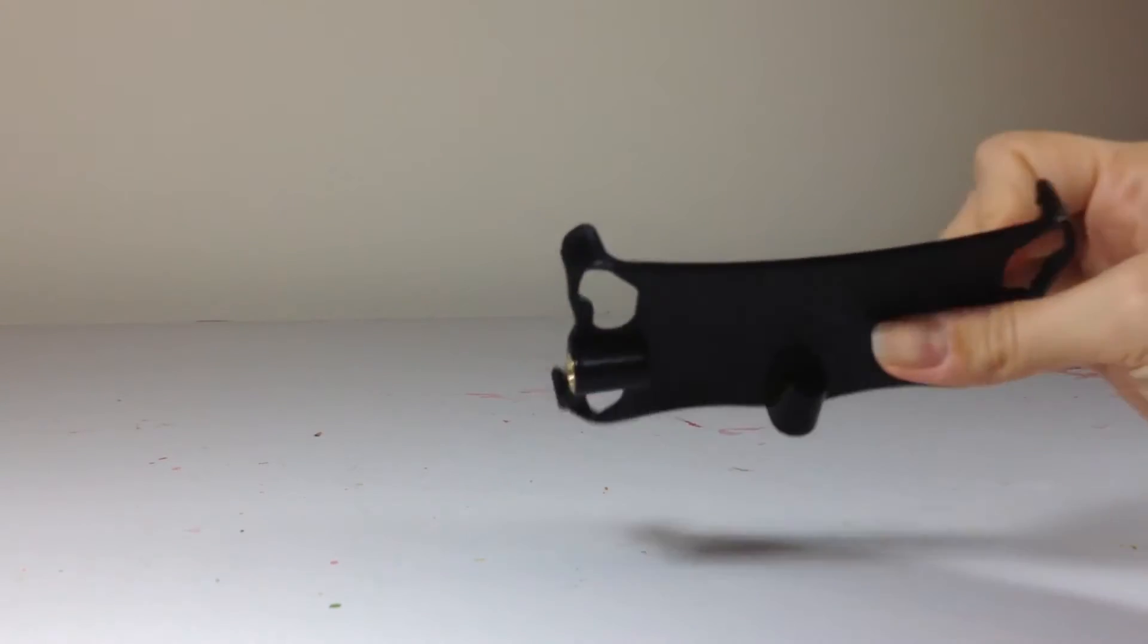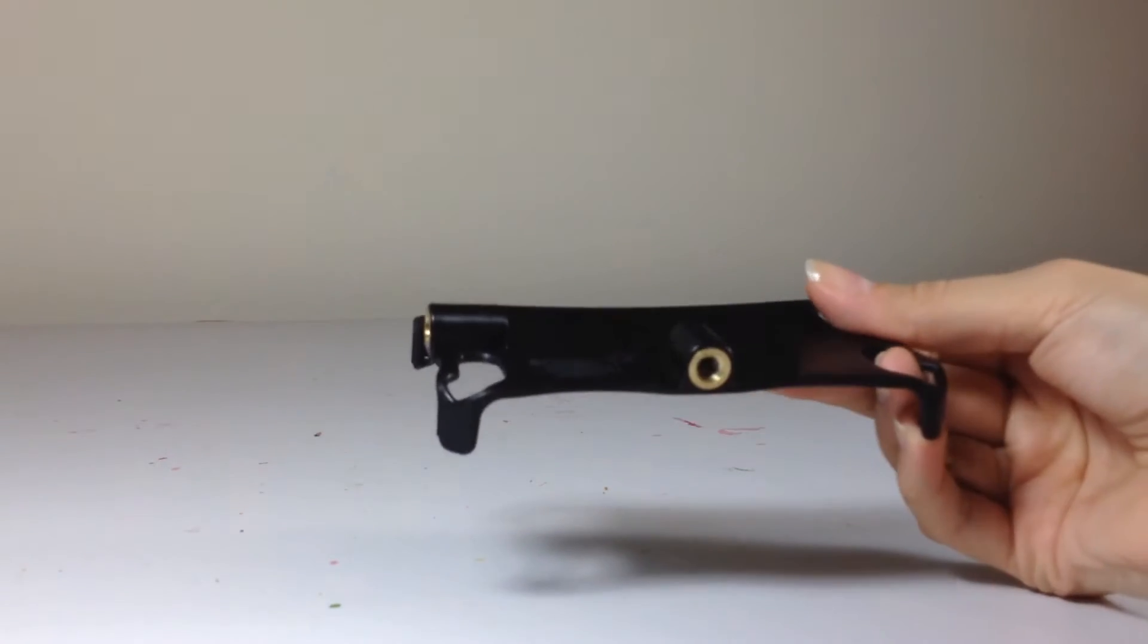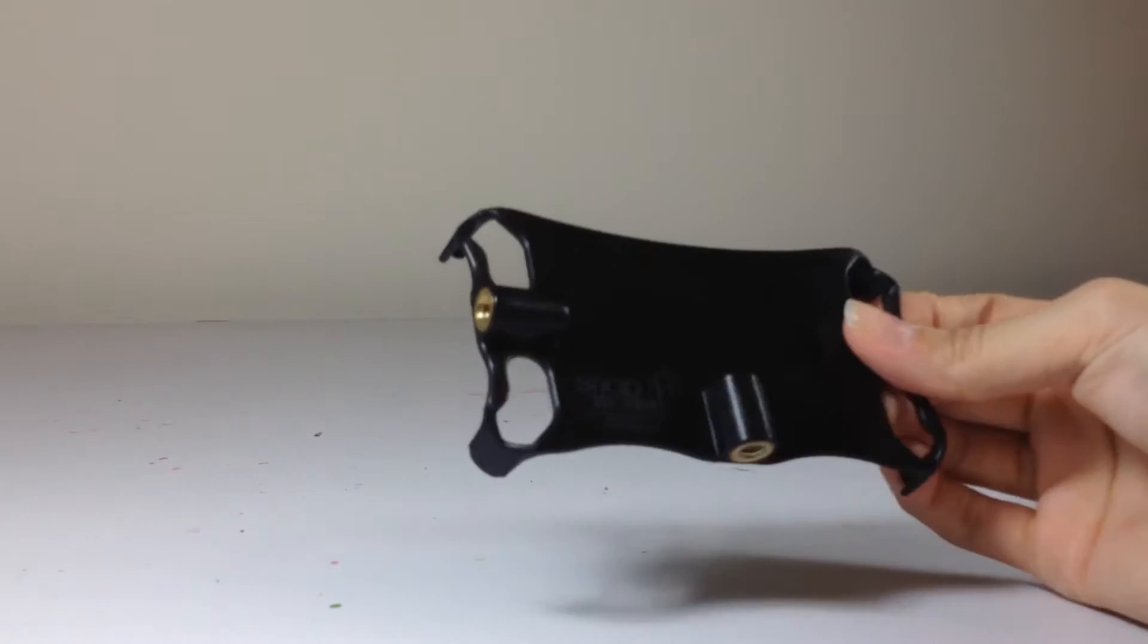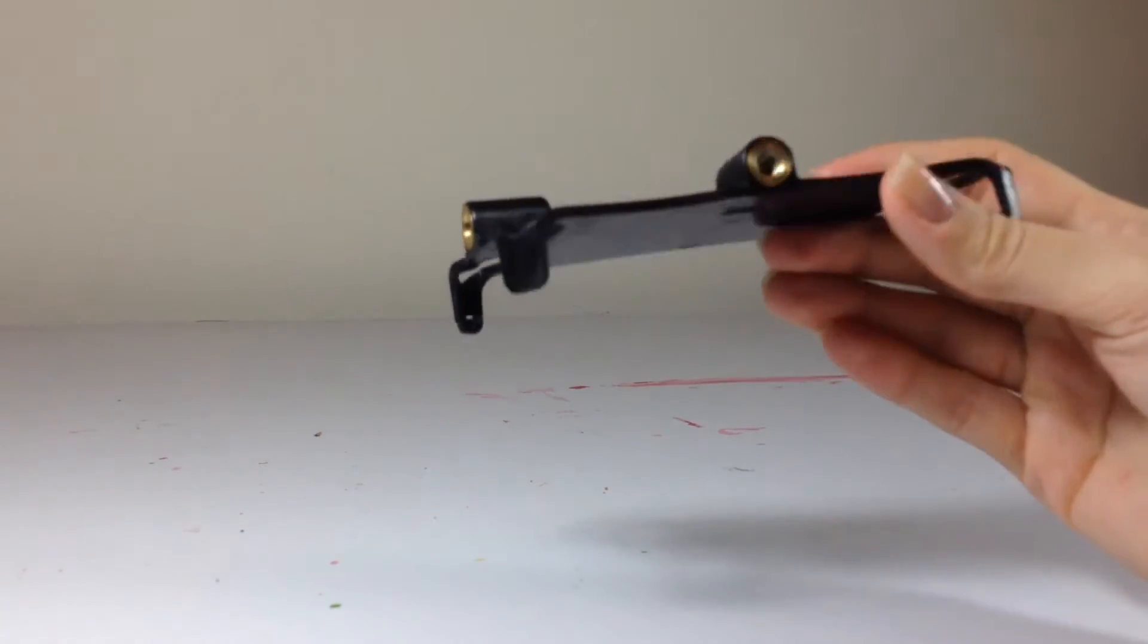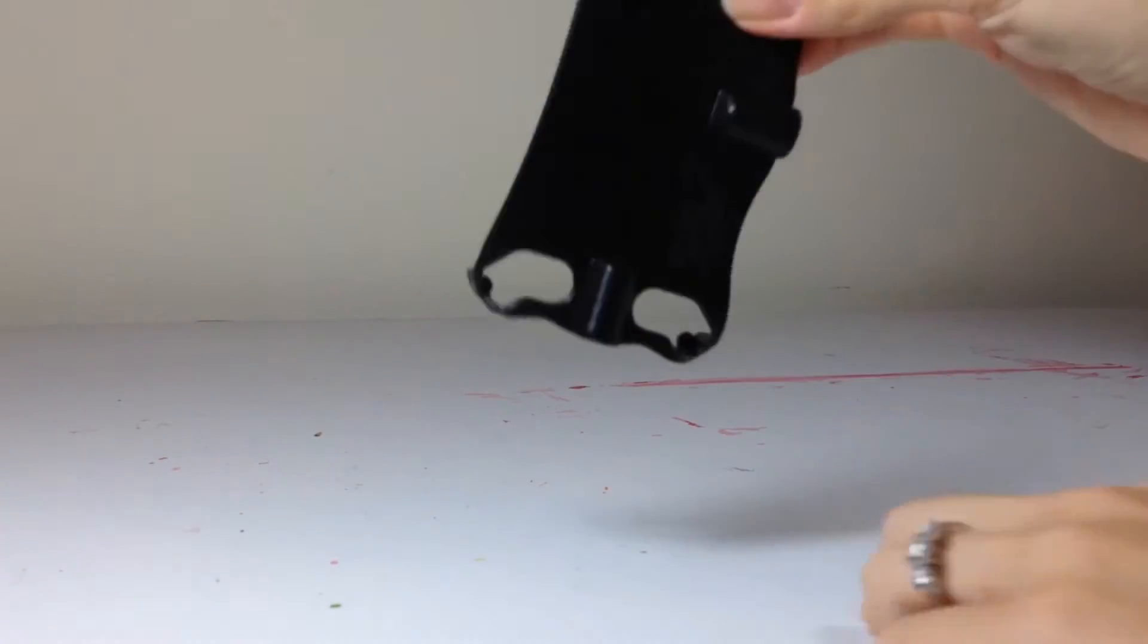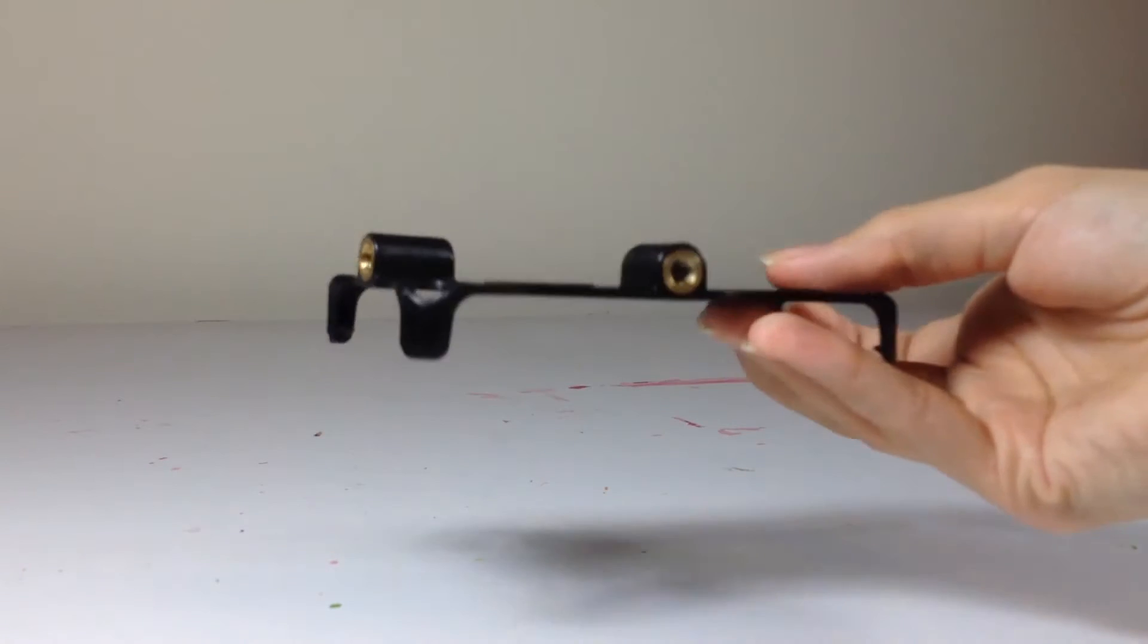You will need some sort of a mount for your camera phone. This one is a snap mount. It just clips right on and then you can do it horizontal or vertical as you're making the video, so that's nice.